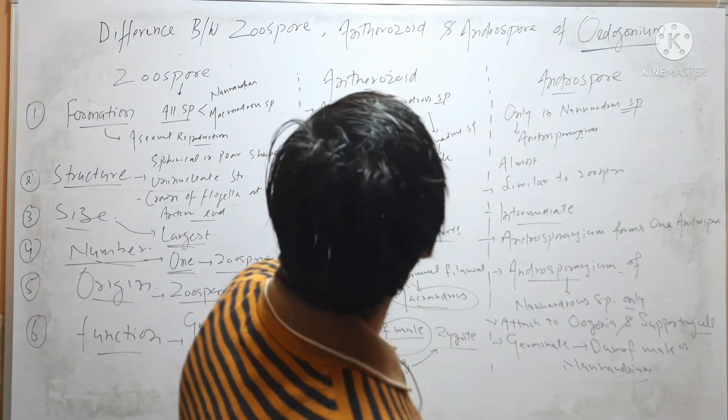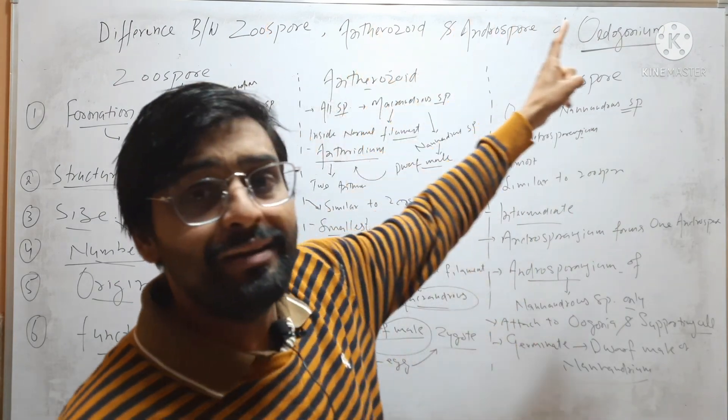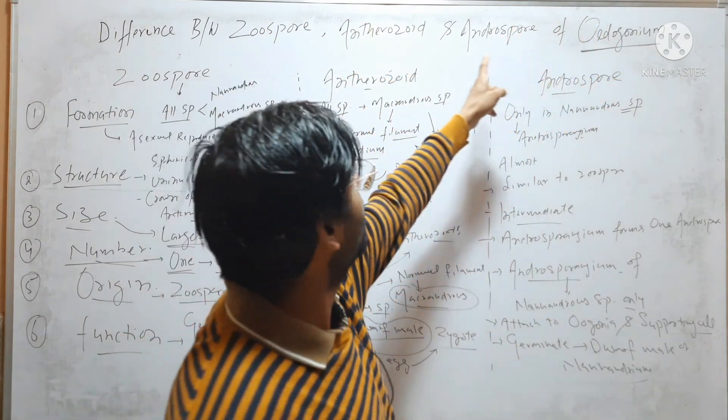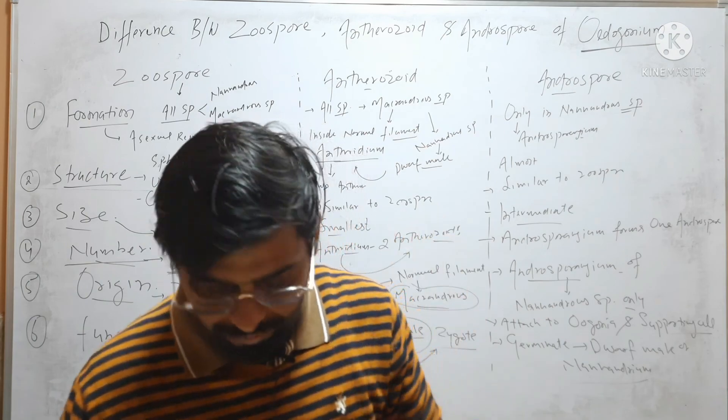This is the difference between Zoospore, Antherozoid, and Androspore of Oedogonium.